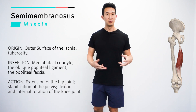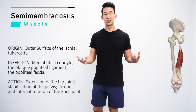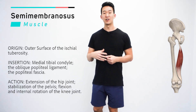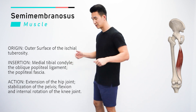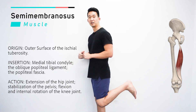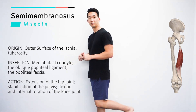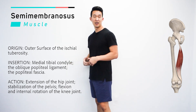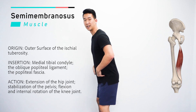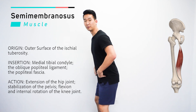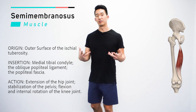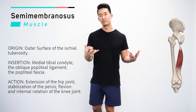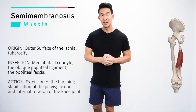An easy way to remember the actions is to think about what you'd do at the gym to work out the hamstrings. Leg curls are great for the hamstrings, and exercises like deadlifts, where we have to extend the hip at the top, are also great for the hamstrings. And that is the semimembranosis.